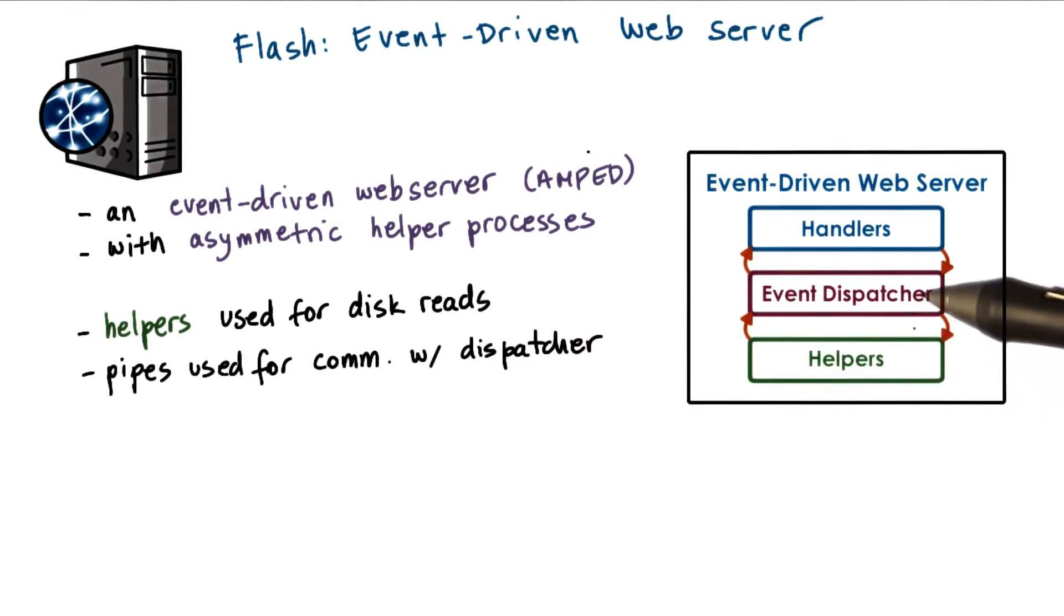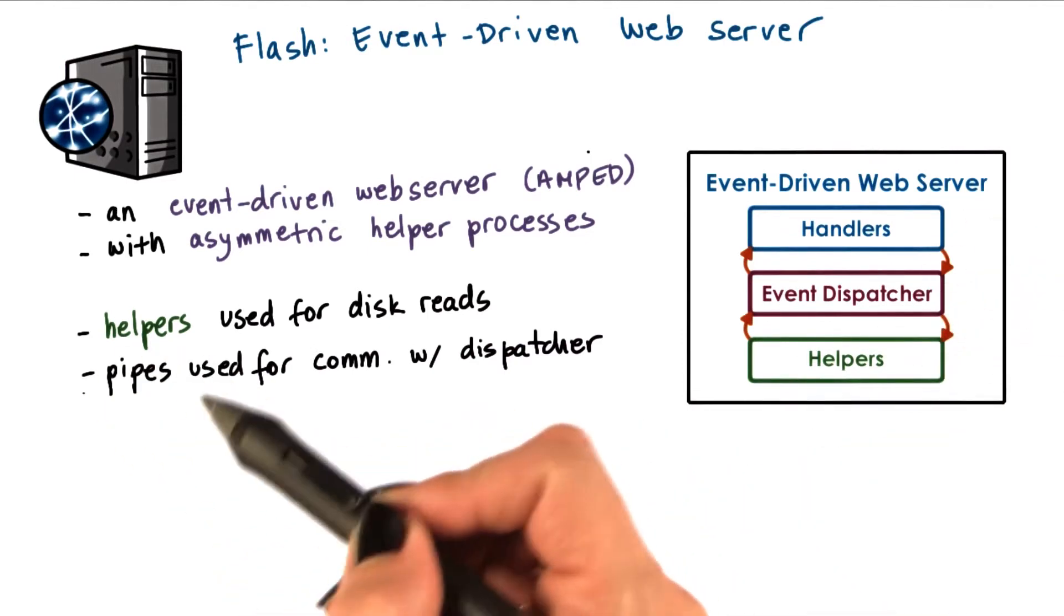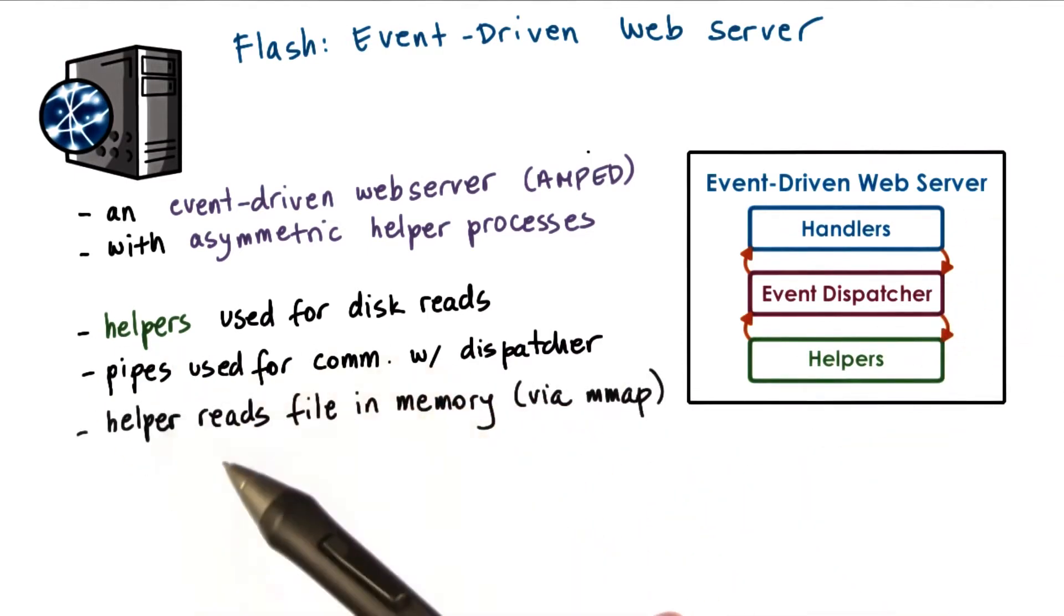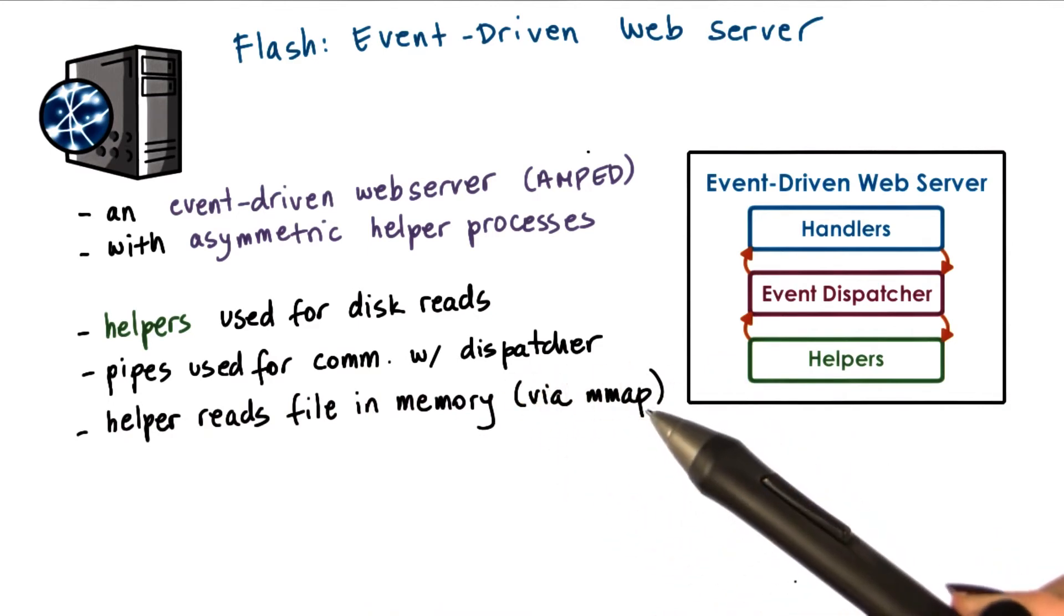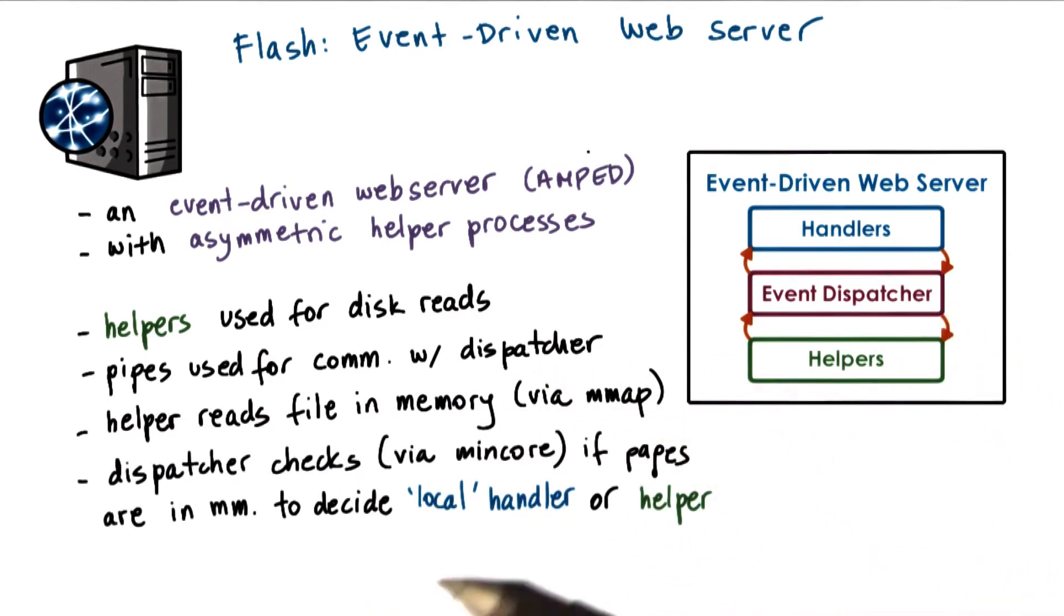Communication from the helpers to the event dispatcher is performed via pipes. The helper reads the file in memory via the mmap call, and then the dispatcher checks via mincore if the pages of the file are in memory.